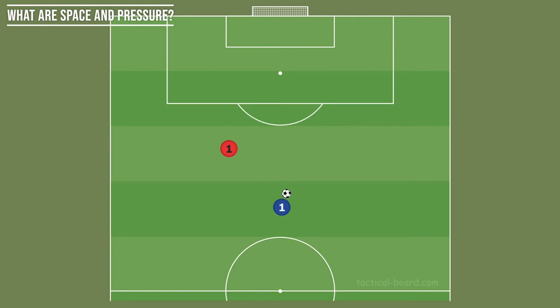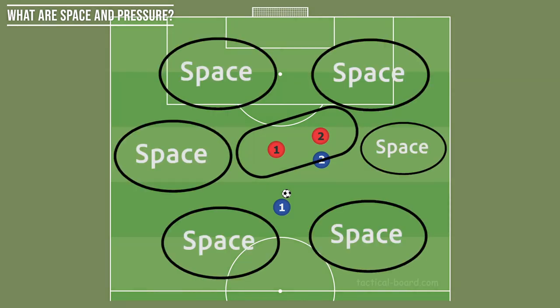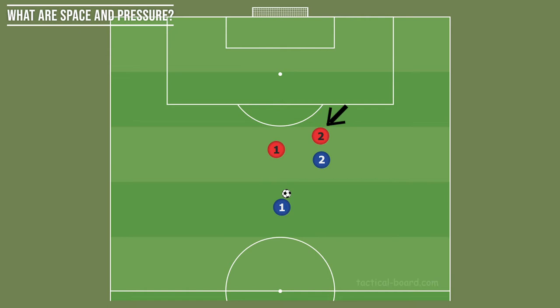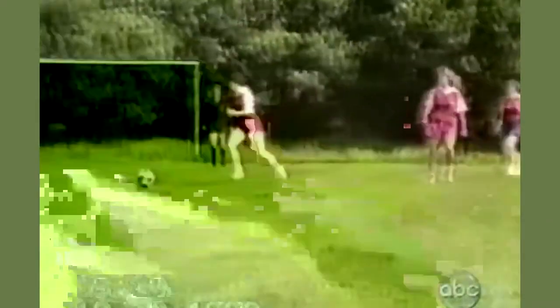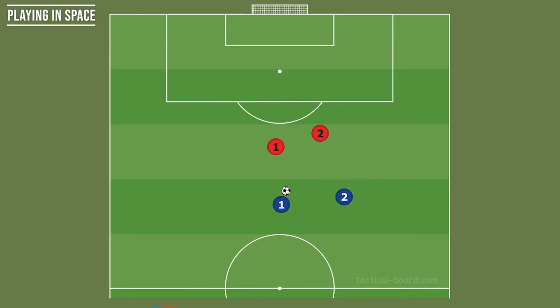Let's add a couple more players here. So here's our pressure, and pretty much everywhere else on the field is space. Player two for blue is not in an area of open space — they're being marked by this defender. And if you've ever played soccer before, you know this makes things more difficult when somebody's on you to try and control the ball. Now if player two can find their way out here, they are now in open space, or over here they're in even more open space.